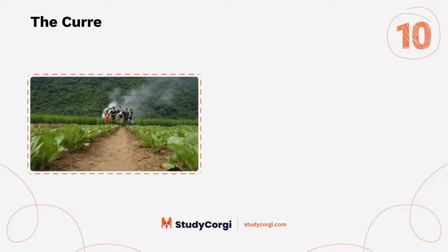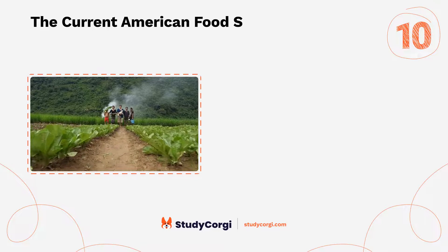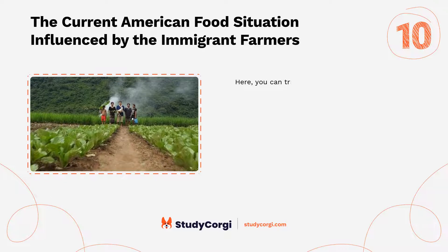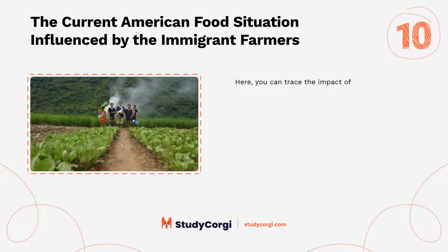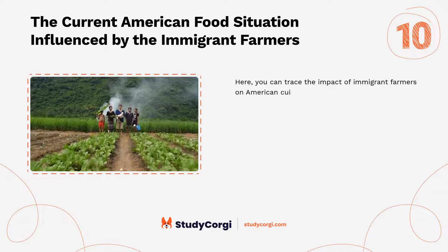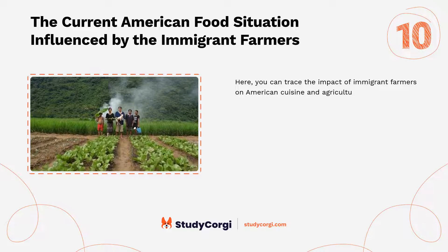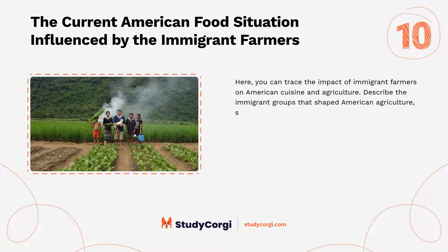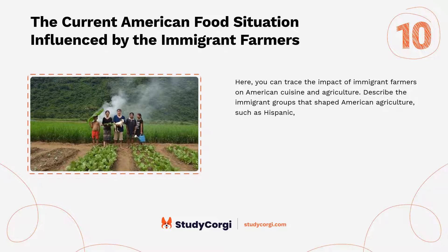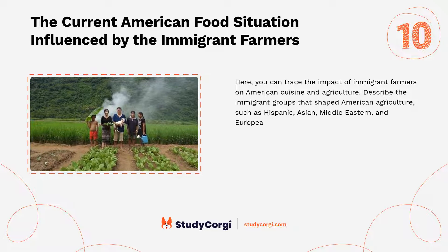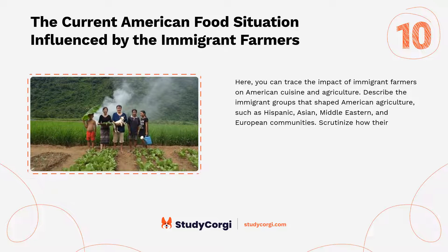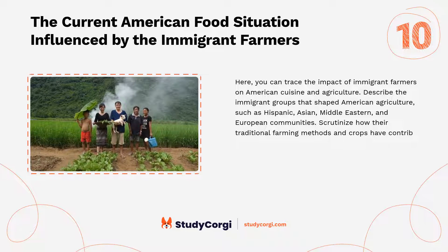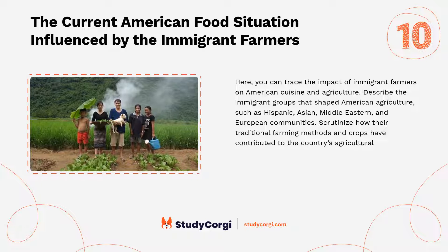The current American food situation influenced by immigrant farmers. Trace the impact of immigrant farmers on American cuisine and agriculture. Describe the immigrant groups that shaped American agriculture, such as Hispanic, Asian, Middle Eastern, and European communities. Scrutinize how their traditional farming methods and crops have contributed to the country's agricultural diversity.